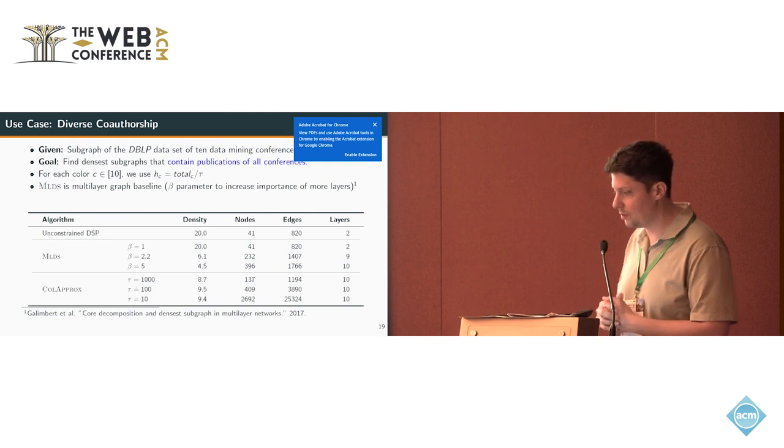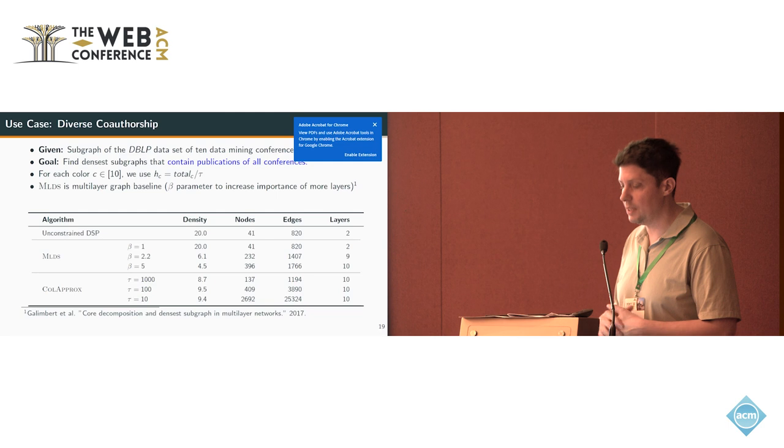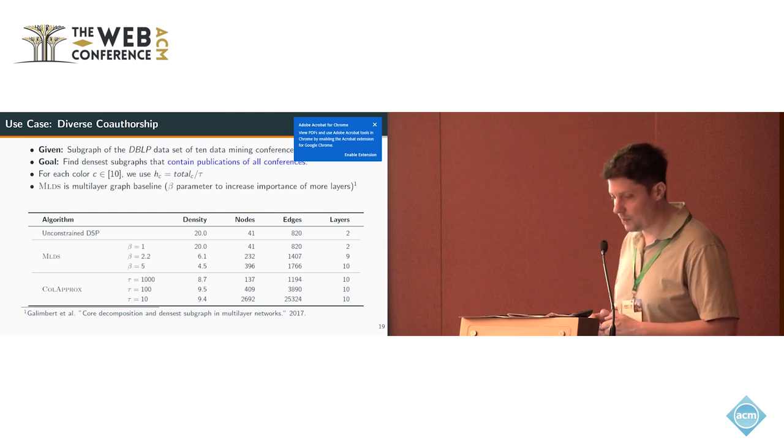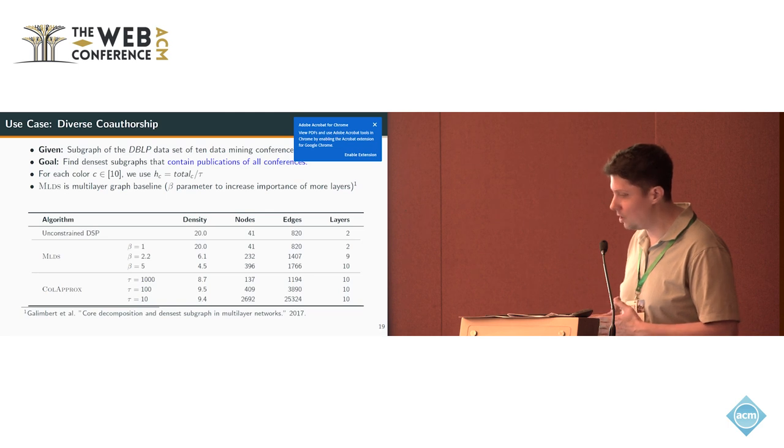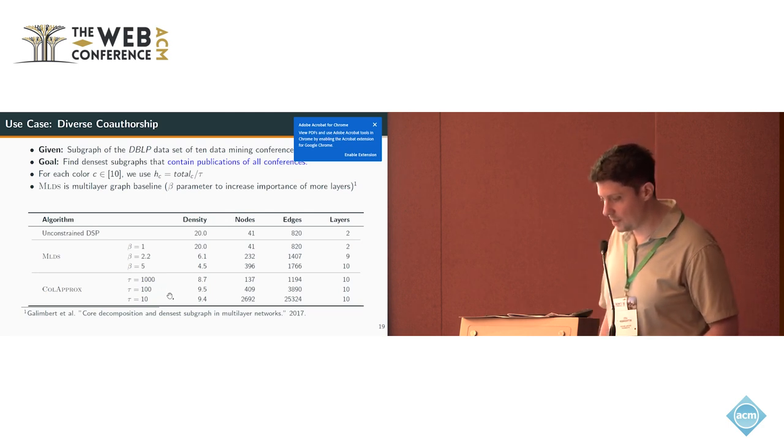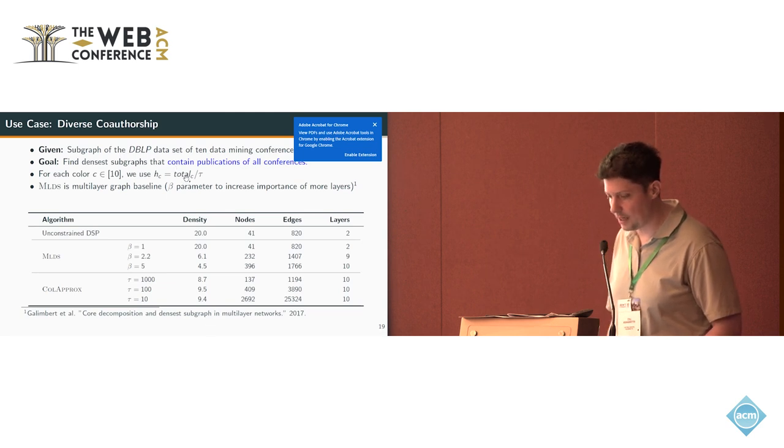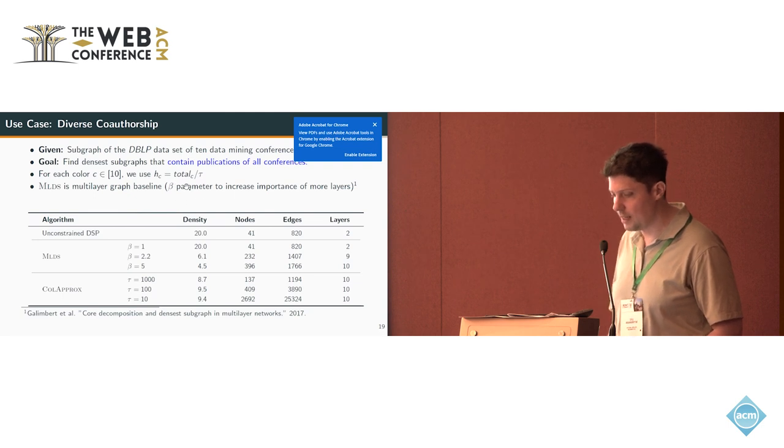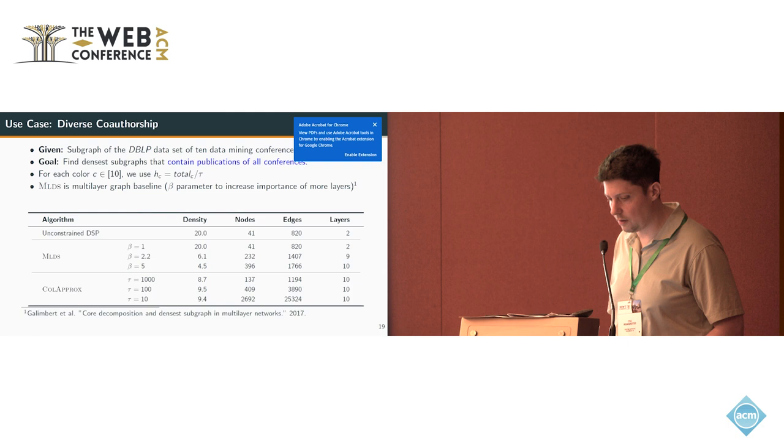Finally, we have a use case where we are given a subgraph of the DBLP dataset which contains the data of 10 data mining conferences. Our goal is now to find the densest subgraph that contains publications of all conferences. For each color or each conference, we set the color requirement to the total number of publications in this conference divided by 10, 100, or 1000. We compare this to the unconstrained DSP and to a densest subgraph algorithm for multi-layer graphs by Galimberti et al., where we have this parameter beta that reflects the importance of more layers. We see for the unconstrained DSP, we have a high density but we only find two layers.